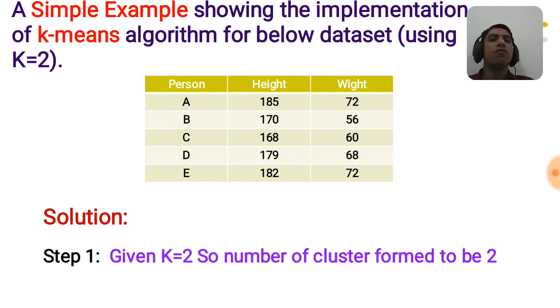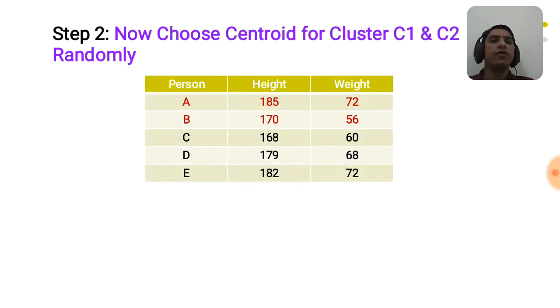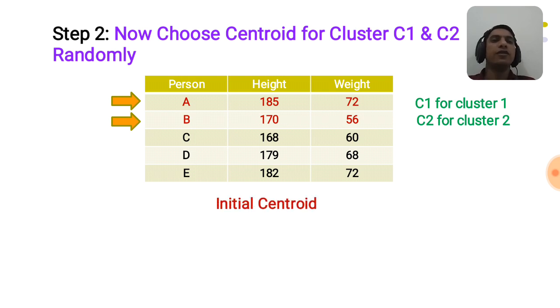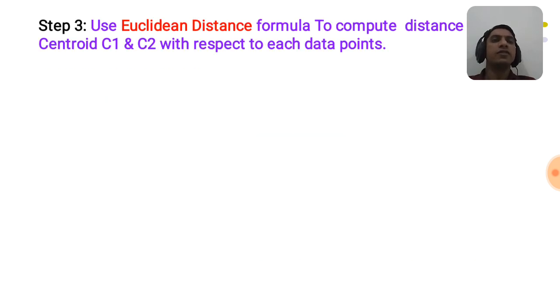Here k is equal to 2, so we have to form 2 clusters. We will choose the initial centroids c1 and c2 randomly. We have chosen the attributes of person A as centroid c1 and the attributes of person B as c2. So the initial centroid points are c1 at (185, 72) and c2 at (170, 56).